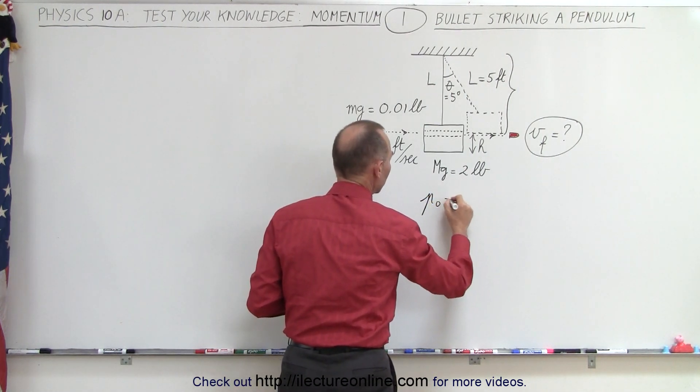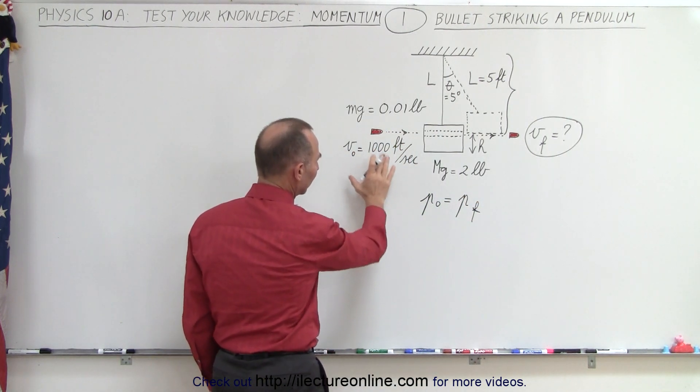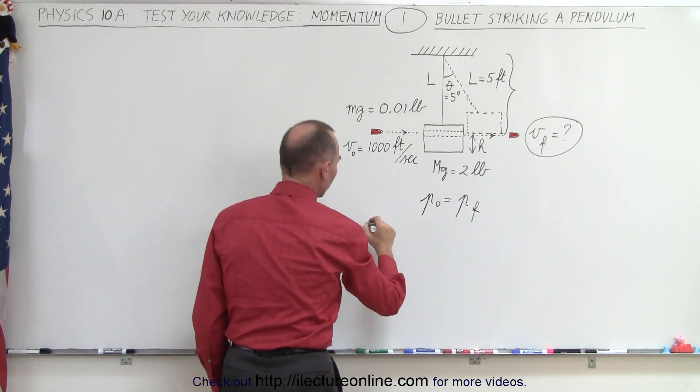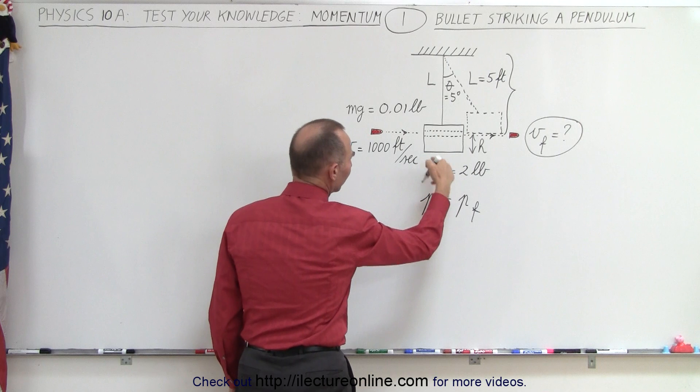We can say that p initial equals p final. We're going to realize that only the bullet is moving, so we're going to use small m for the bullet and big M for the block.